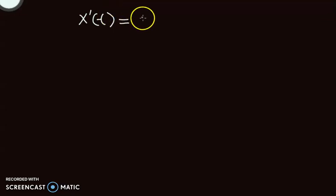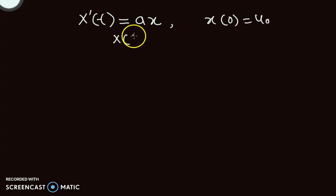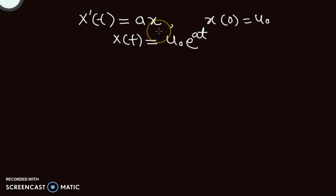We have seen in the previous video that if we are given with this type of simplest differential equation with x(0) = u0, then the solution was given by x(t) = u0·e^(at). So in this short video clip, we will analyze this differential equation graphically.